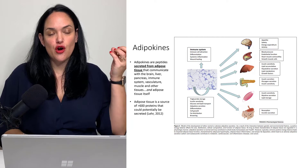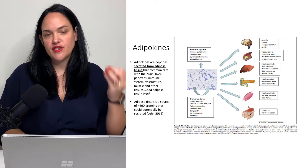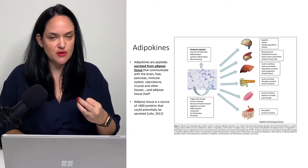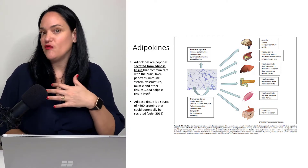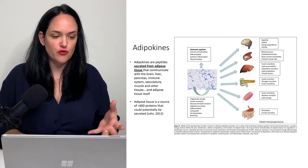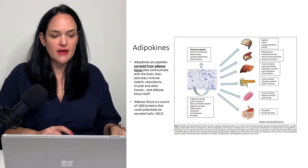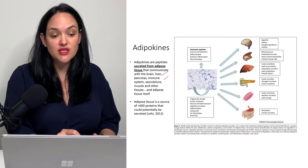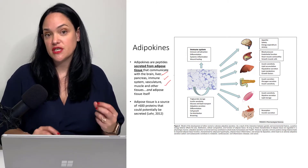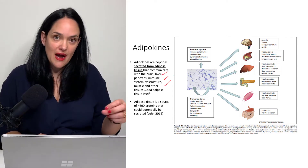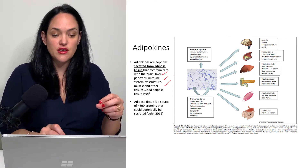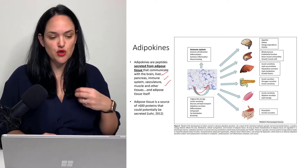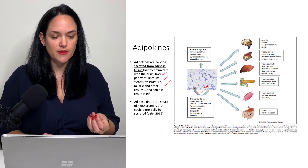Adipokines are a number of different peptides that are secreted from adipocytes and have numerous different functions all over the body. They're secreted from adipocytes and communicate with a bunch of different tissues, and they also have an effect on adipose tissue itself, so there is also an autocrine function as well.